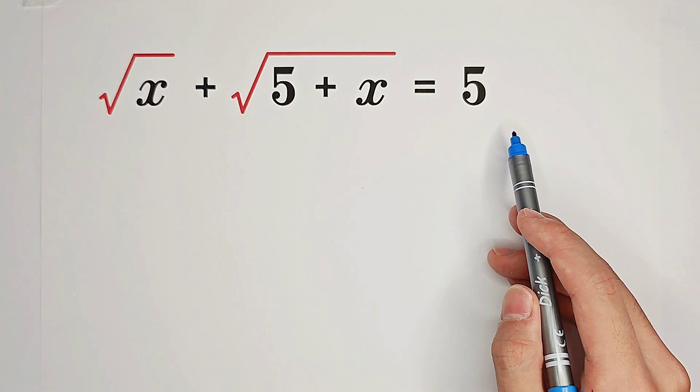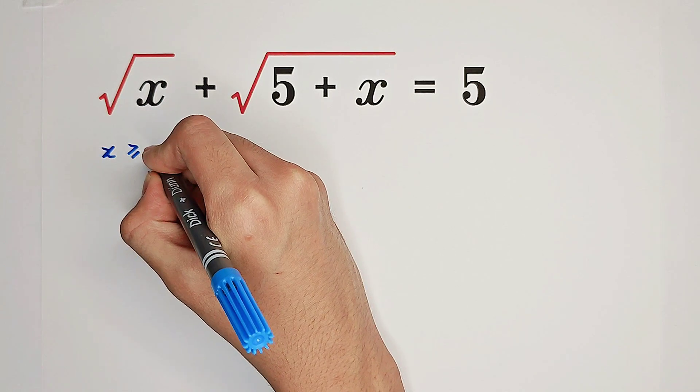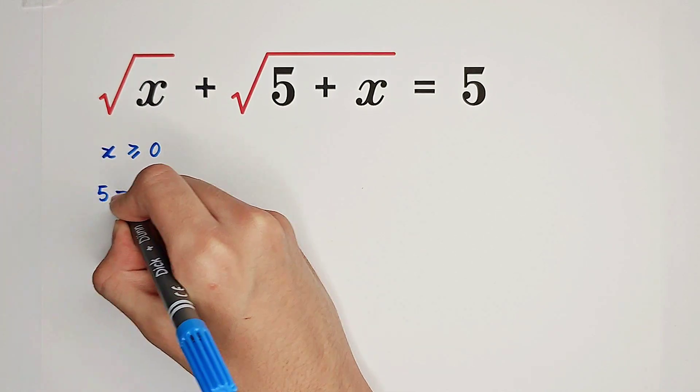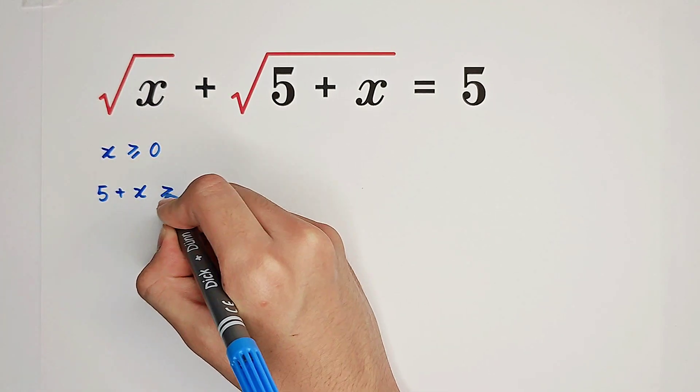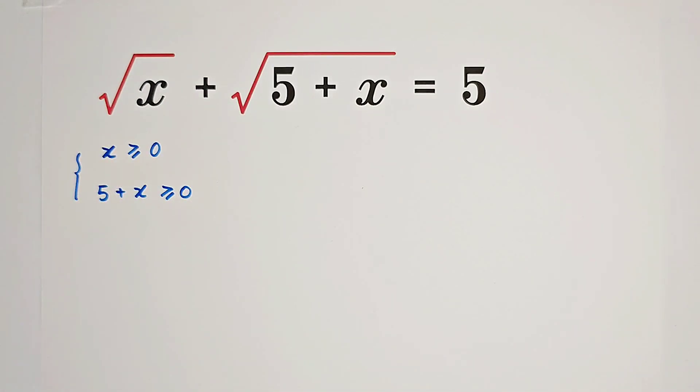First, we need to establish that x should be non-negative, and 5 plus x as well, because they are both under the root.